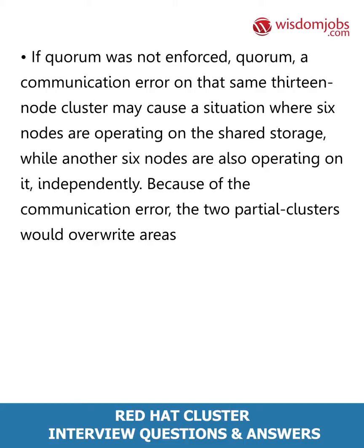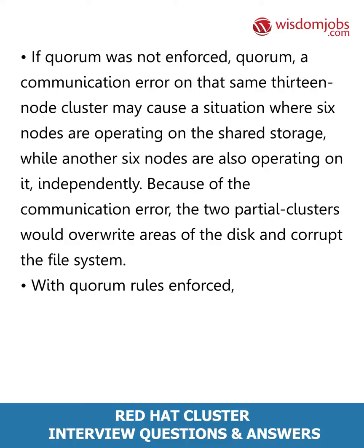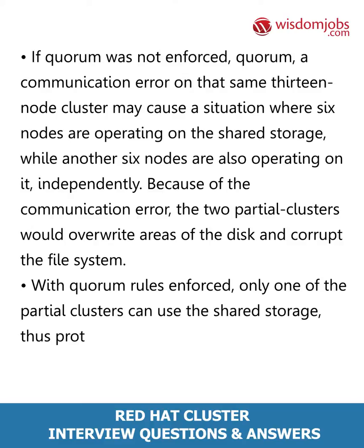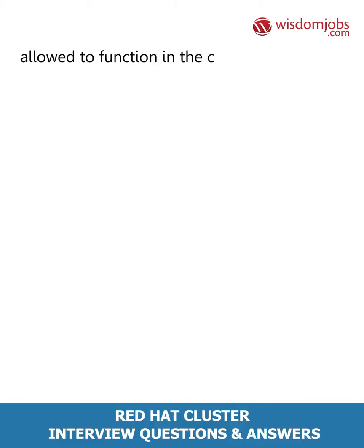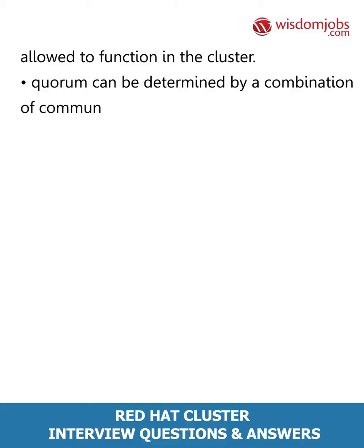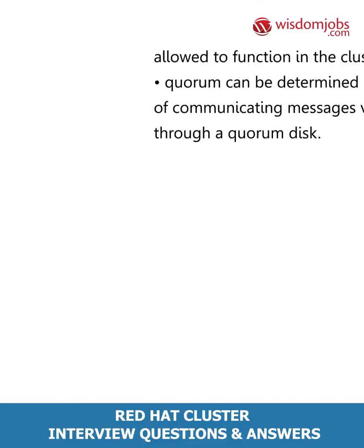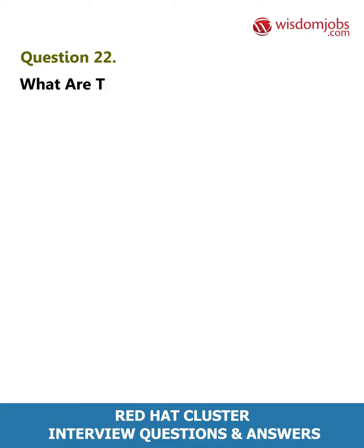If quorum was not enforced, a communication error on that same 13-node cluster may cause a situation where six nodes are operating on the shared storage while another six nodes are also operating on it independently. Because of the communication error, the two partial clusters would overwrite areas of the disk and corrupt the file system. With quorum rules enforced, only one of the partial clusters can use the shared storage, thus protecting data integrity. Quorum doesn't prevent split brain situations, but it does decide who is dominant and allowed to function in the cluster.